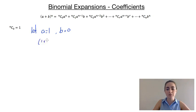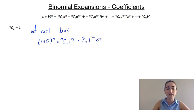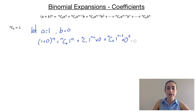So then this expansion, we're going to have 1 plus 0 to the power of n. It's going to be equal to nc0 times 1 to the power of n, then nc1 times 1 to the power of n minus 1, multiplied by b which is 0. Then nc2 times 1 to the power of n minus 2, times b which is 0, to the power of 2. And that continues all the way up until our last term, which would be ncn times 0 to the power of n.